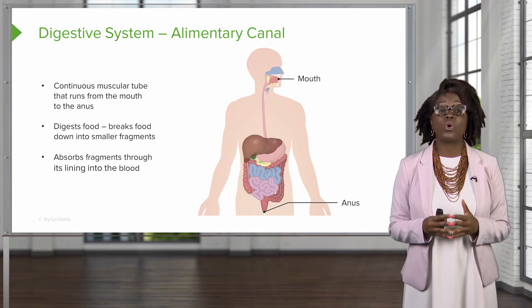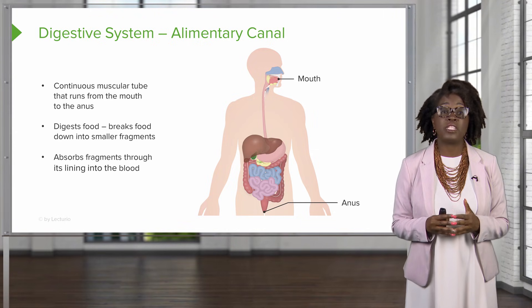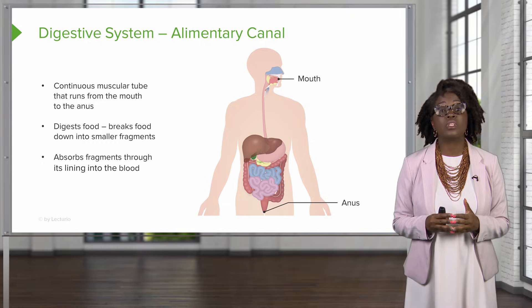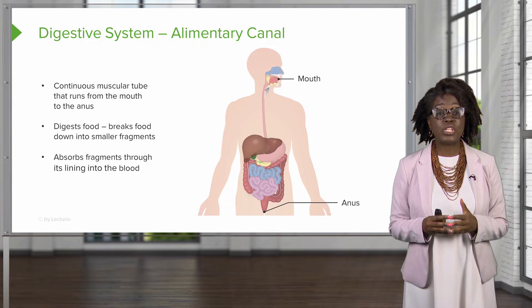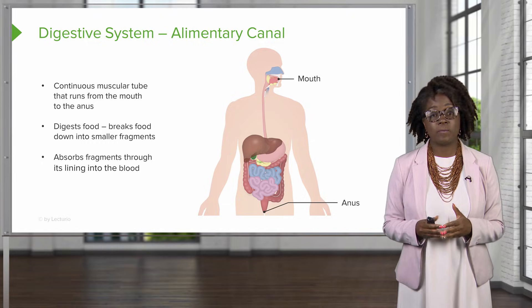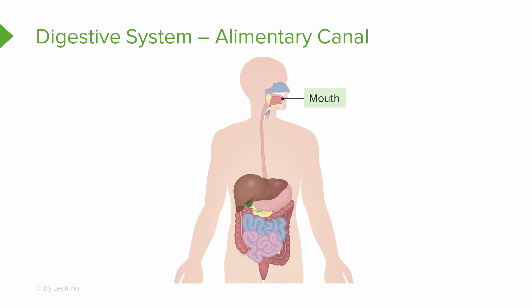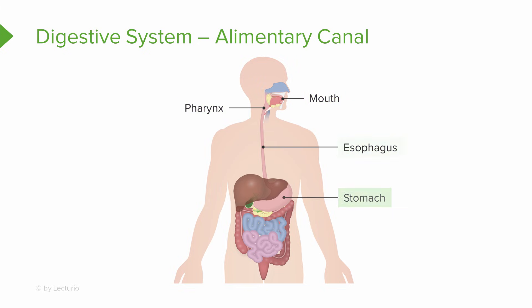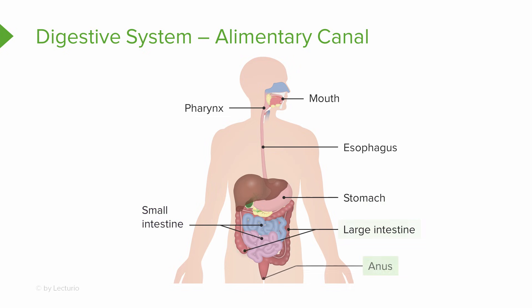Also in the canal, we're going to absorb these fragments through the lining into the blood. The organs of the alimentary canal include the mouth, the pharynx, the esophagus, the stomach, the small intestine, the large intestine, and the anus.